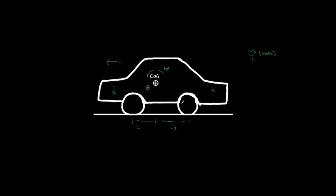The bulk of the load transfer — or weight transfer, as you'll typically hear people say — is the inertia force. We're coming along, we brake, the car wants to keep going the way it was. It resists the retarding force, and as it does this, you get thrown forward — your head goes towards the steering wheel. That's the inertia force you're feeling, and that's equal to the mass times the acceleration. This force is where the bulk of the load transfer will come from.